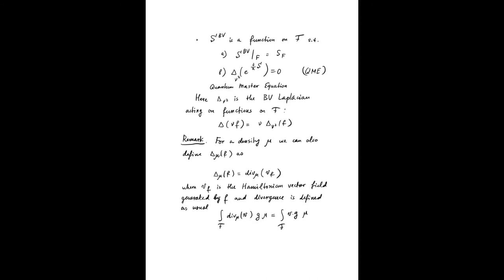Now, suppose that we will succeed in defining a functional on the space of BV fields such that if you restrict it to the original space F, we will have the initial action. And the second requirement is that the exponent of this action satisfies the quantum master equation.